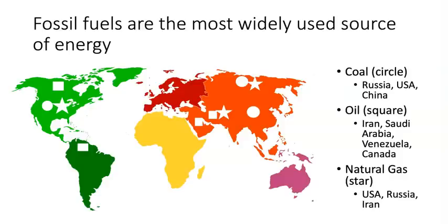Let's review where fossil fuels are located throughout the world. Coal, denoted with a circle on the map, is found in the largest amounts in Russia, the U.S., and China. Oil, shown with squares, has the largest reserves in Iran, Saudi Arabia, Venezuela, and Canada. Natural gas, denoted by a star, is most commonly found in large reserves in the U.S., Russia, and Iran. Reserves are the available amount of fossil fuel we predict is extractable.